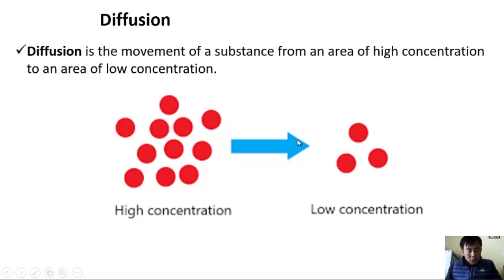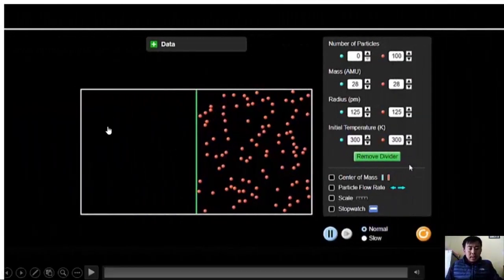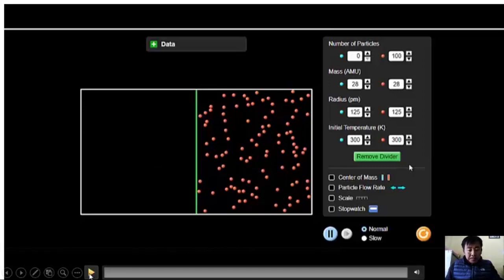In order to understand diffusion in a better way, I have prepared this. Imagine this is the low concentrated area. And here, since we have many dots here, more concentrated area. As per the definition of diffusion, the substances will move from higher concentrated area to the lower concentrated area. Let's see how it moves.